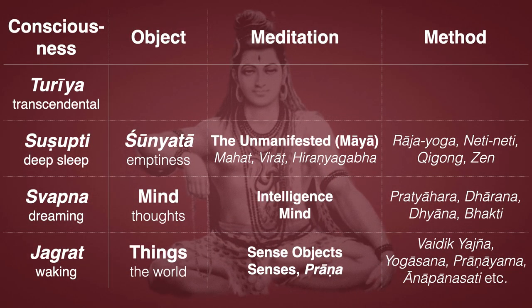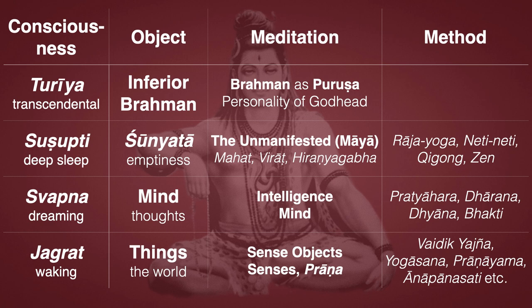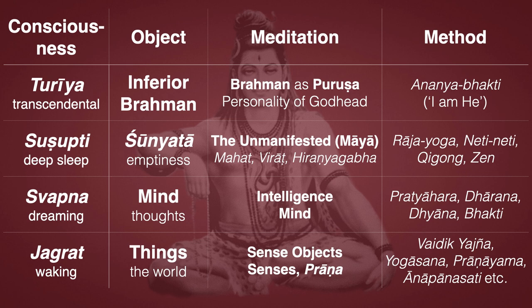Finally, Turiya consciousness is transcendental. It is that consciousness which is aware of the inferior Brahman — Brahman with qualities, Saguna Brahman — and the meditation is on Brahman as the Purusha, or the personality of Godhead. How is this different from bhakti? Well, in bhakti, meditation on God, one conceives that I am different from God and God is different from me — we're two different beings with a relationship. Whereas at this level, the meditation on God is called Ananya Bhakti: I am He, He is I, we are one. Aham Brahmasmi — I am Brahman. And this is the height, the pinnacle, the goal, the target we're trying to hit with all these meditations.